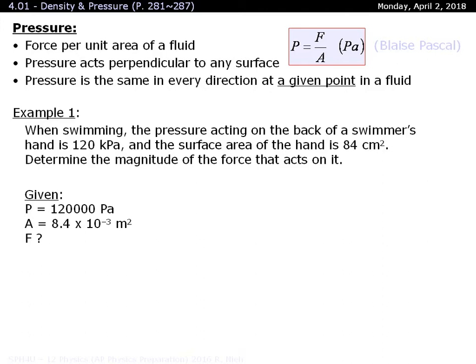Or if you convert from centimeters squared into meters squared, you need to divide by 100 and divide by 100 yet again. And that's why the surface area works out to 8.4 times 10 to the negative 3 meters squared. So keeping that in mind when you go through your calculations, it works out to roughly 1000 newtons.